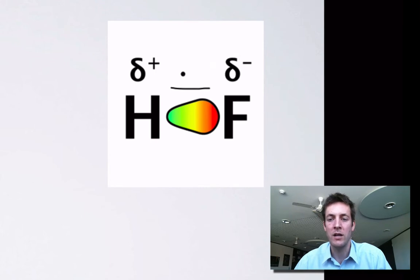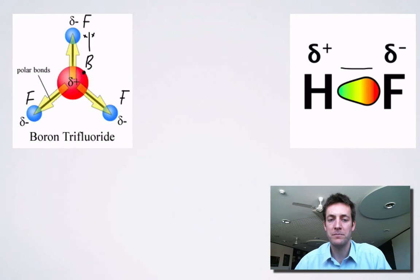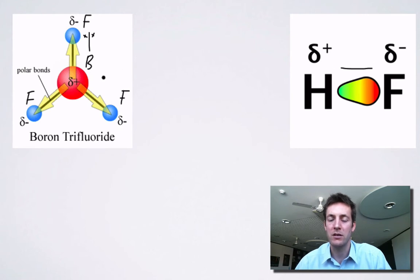So this end of the molecule — in this case the bond and the molecule, because there are just two atoms — becomes slightly negative, and this end becomes slightly positive. This molecule is a polar molecule. Although it has polar bonds, as we'll see in a minute, that other molecule is not polar, and we'll see why in just a moment.